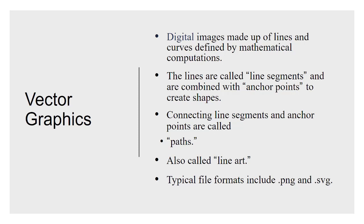In vector graphics, images are made up of lines and curves, similar to what you did in geometry as a high school student. You plot a point on a graph, plot another point, and draw a line between those two. At its simplest definition, that's what Illustrator is doing — you're adding points and connecting those with paths or line segments, combining them repeatedly into more complex shapes to create art.